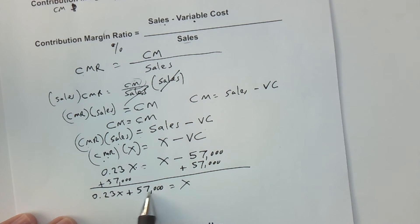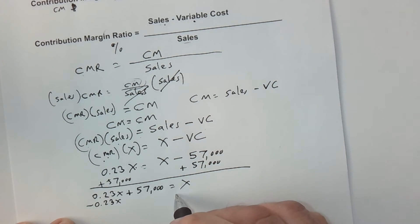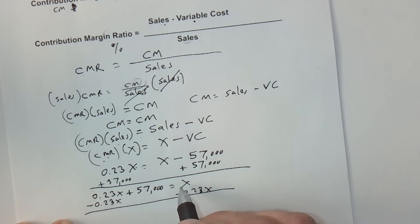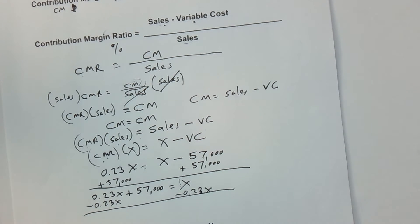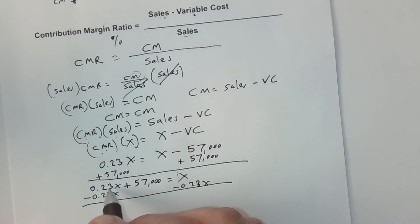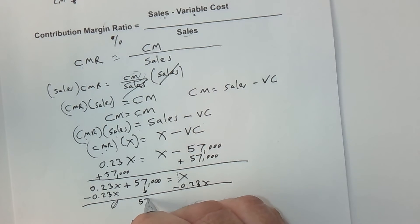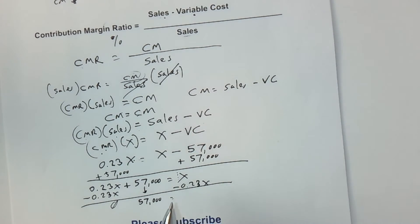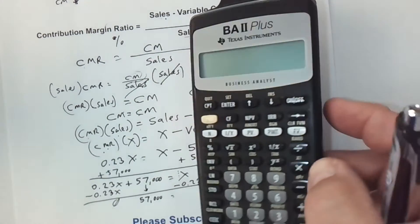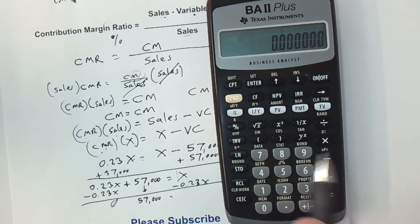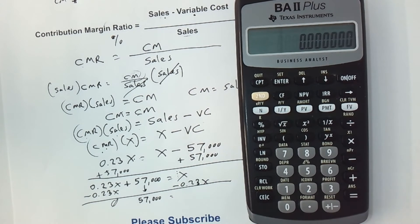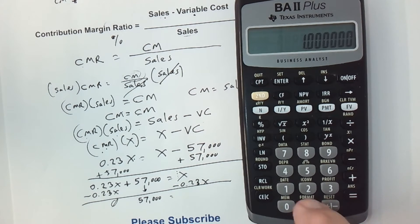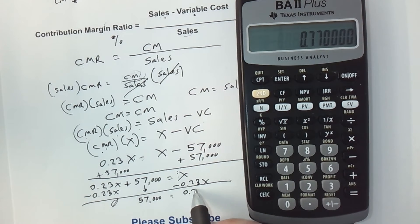On the left side, 0.23x minus 0.23x is zero, so I bring down 57,000 equals — and on the right I subtract 0.23 from the invisible 1 to get 0.77. I'll use my BA2 Plus calculator to be sure: 1 minus 0.23 gives me 0.77. So I now have 57,000 equals 0.77x.